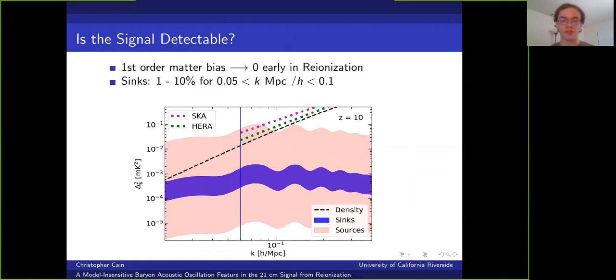it is expected that the bias factor that sits in front of the linear matter term in our expansion should go through zero. And this happens because this term is proportional to the sum of fluctuations in the matter density and the neutral fraction. And these tend to be anti-correlated early in reionization because the most dense regions ionize first. And when these fluctuations are exactly anti-correlated, the linear matter term disappears and the second order term becomes the dominant one.